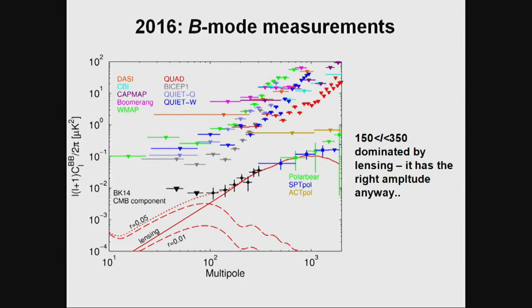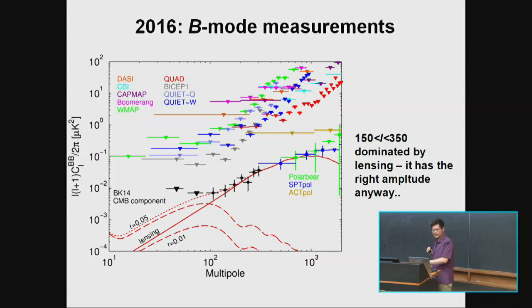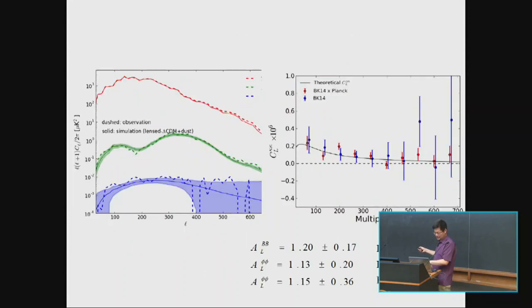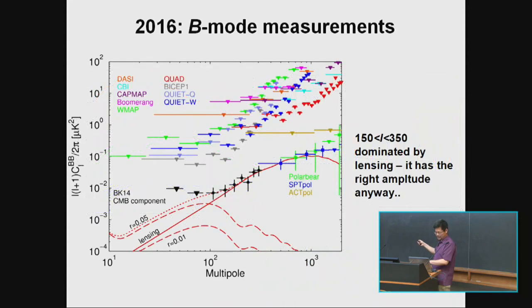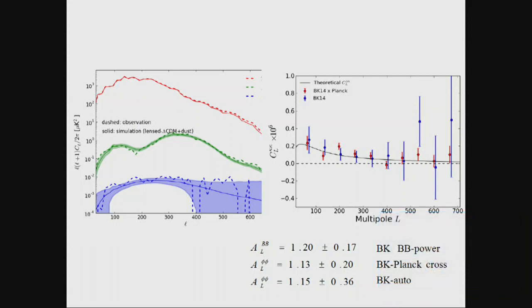So it's lensing — perhaps not news that this is indeed lensing, but the interesting thing is: if you want a theory that predicts B-mode power in this L range, the room is getting smaller. Because what we measured not only has a lensing power spectrum but also lensing statistics. The good agreement between these two numbers tells you how much room you still have if you want to squeeze in an alternative model of B-mode, like string-generated Kaiser-Steppen-type effects.